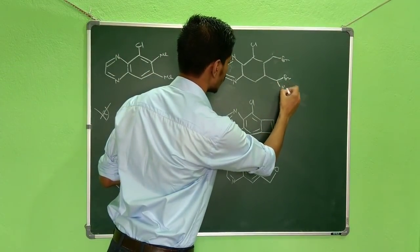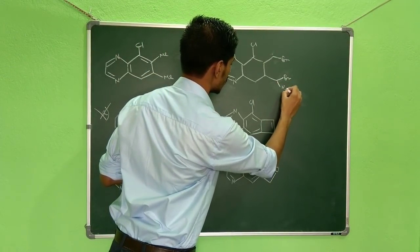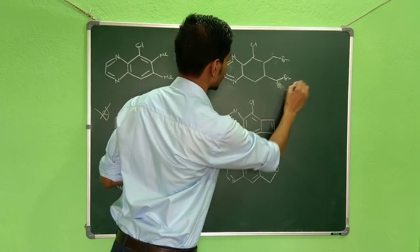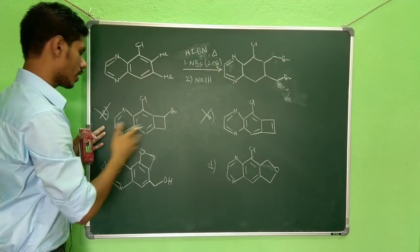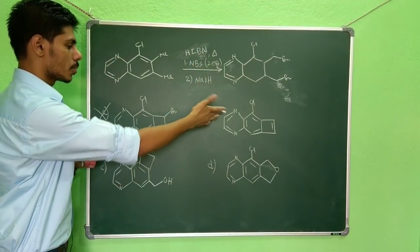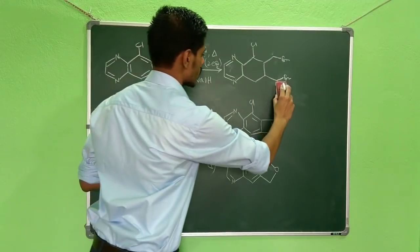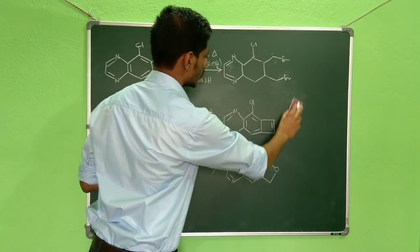So we can rule out product A and product B. To make product A, you need to deprotonate from here, which will give you this minus, and that will add up over here to give you this product, and then elimination will give this product. But sodium hydroxide is not that much stronger to make negative charge.